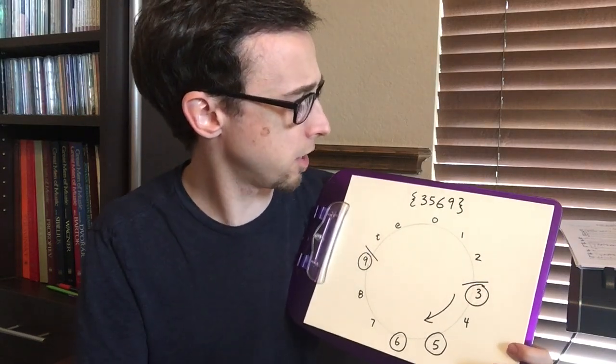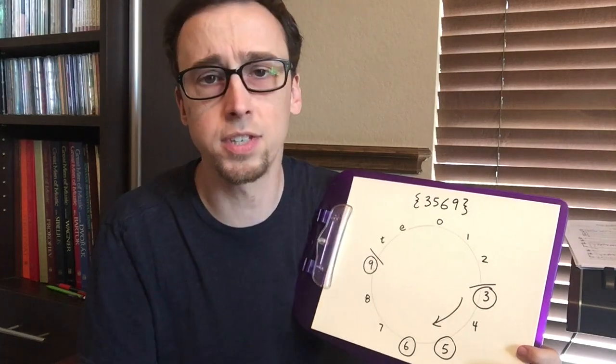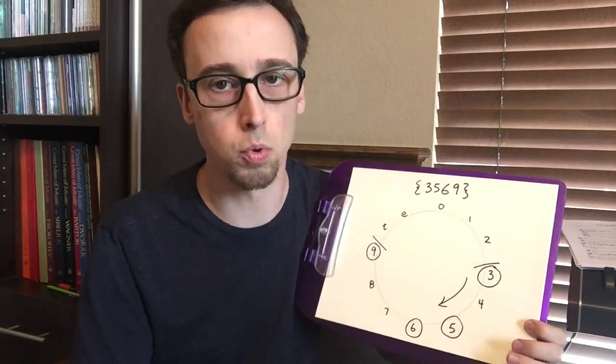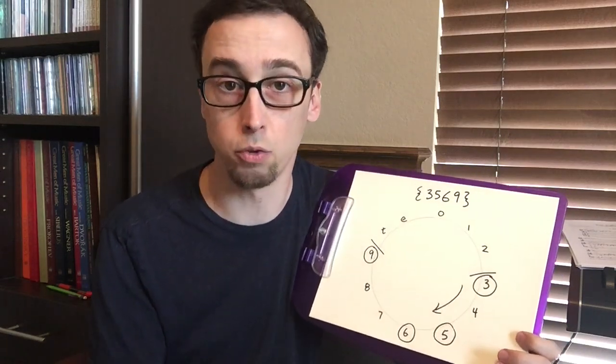So if we look at this pitch class set, this normal order is 3569. We found this in the last video that I did on finding the normal order, and there are two additional steps that we have to do to find the prime form after we found the normal order.